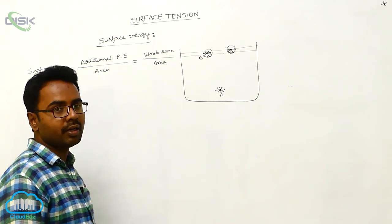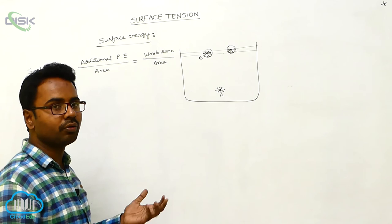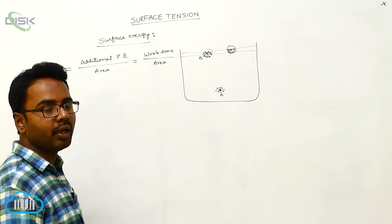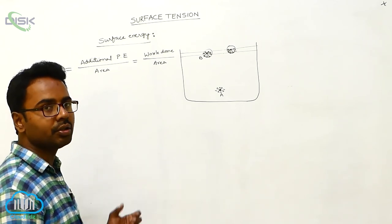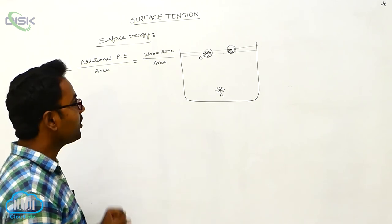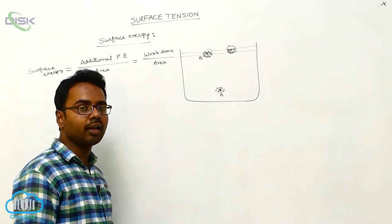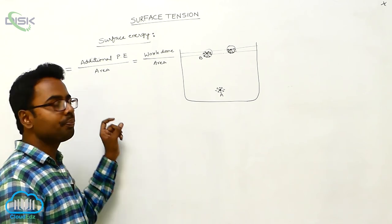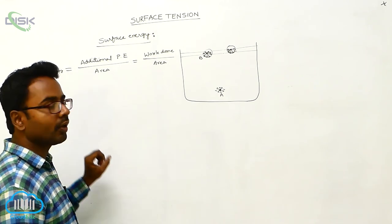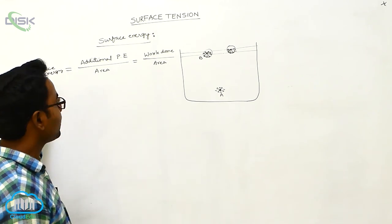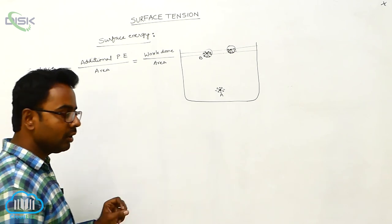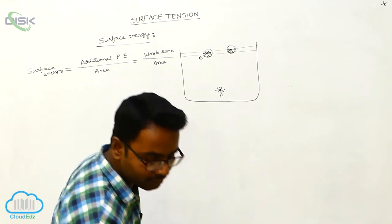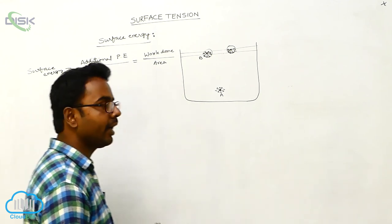Surface energy has the same units as energy. The SI unit of energy is joule, so the SI unit of surface energy is also joule. To summarize: surface energy is the additional potential energy gained by the surface film per unit surface area. Now let us derive the relation between surface tension and surface energy.